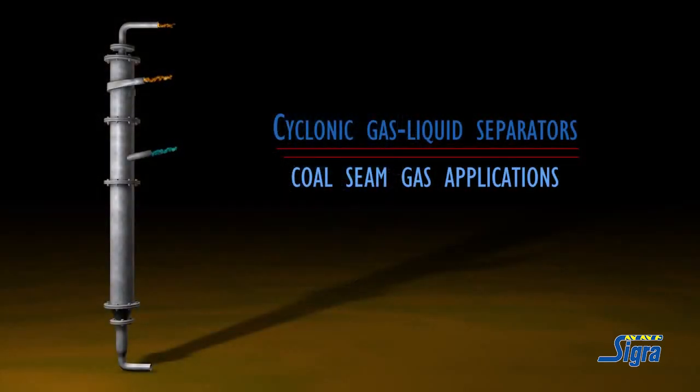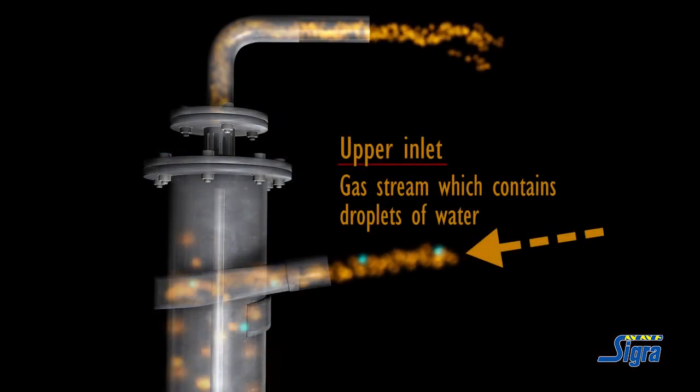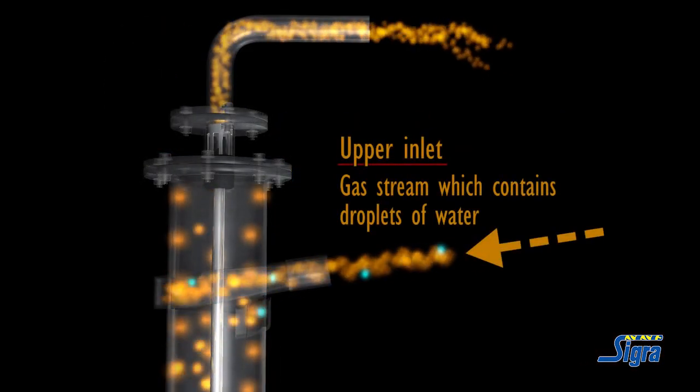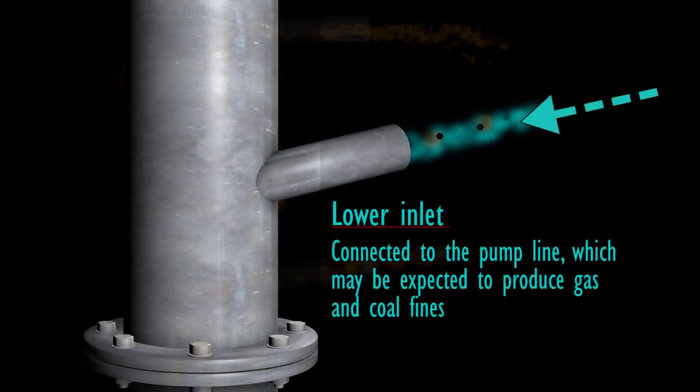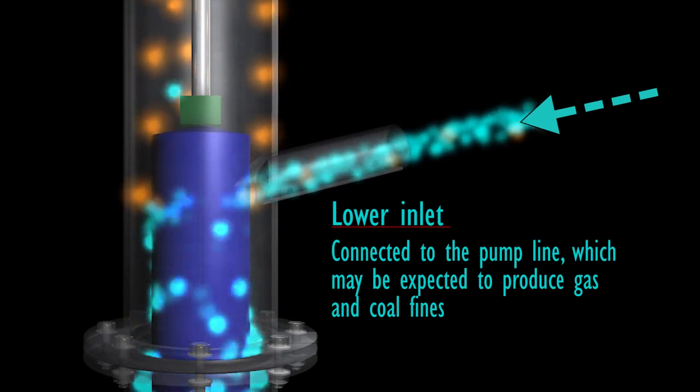For the coal seam gas applications, these cyclonic separators characteristically have two inlets. The upper inlet is for the gas stream which contains droplets of water, while the lower inlet is connected to the pump line, which may be expected to produce gas and coal fines.